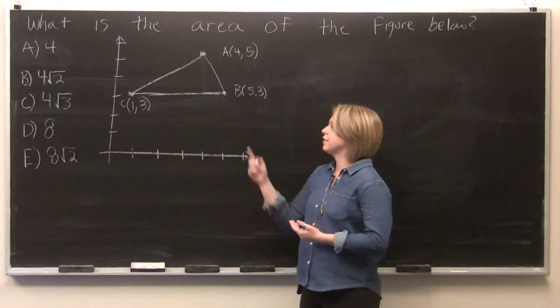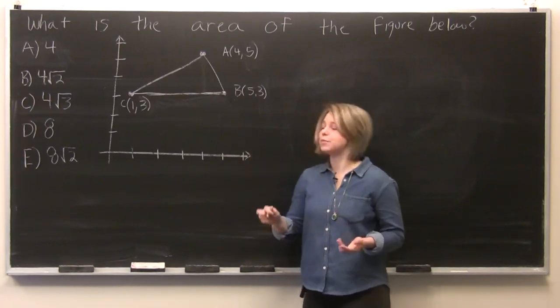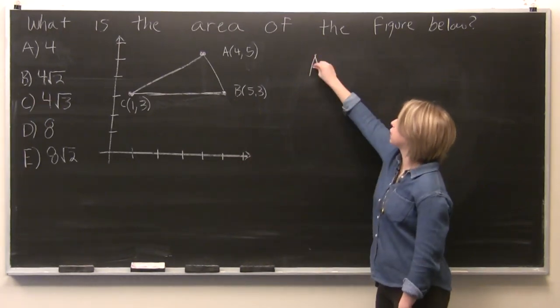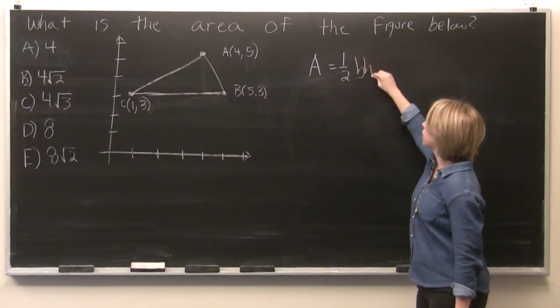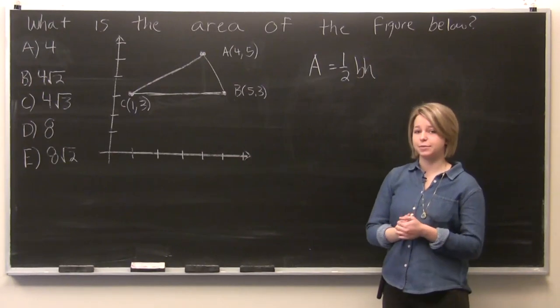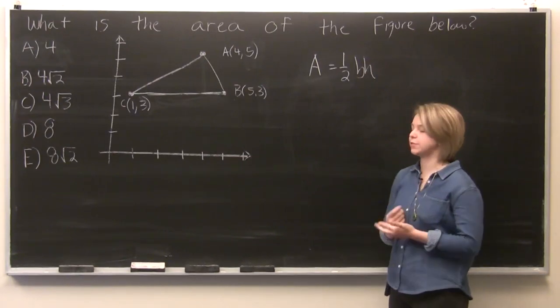We know that finding this is really just going to be as simple as plugging in values to the formula for a triangle's area. A equals 1 half base times height. And so let's first find our base.